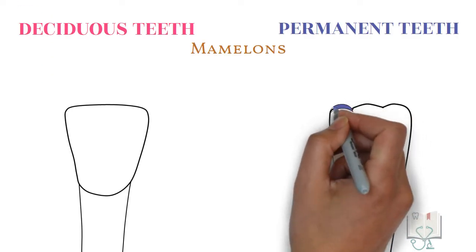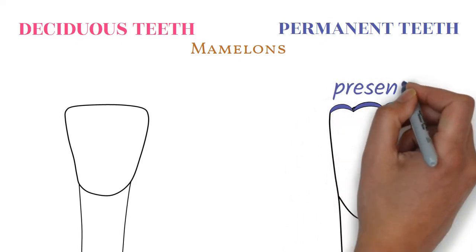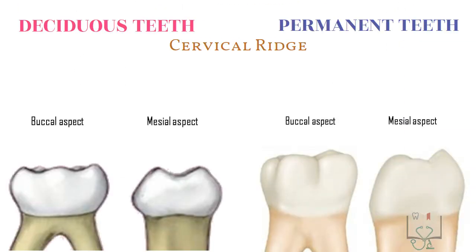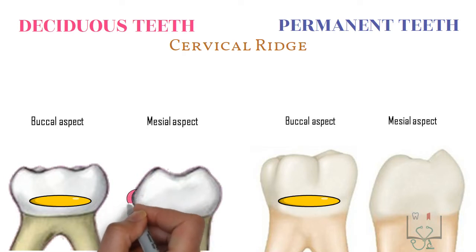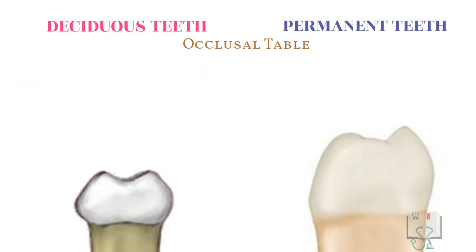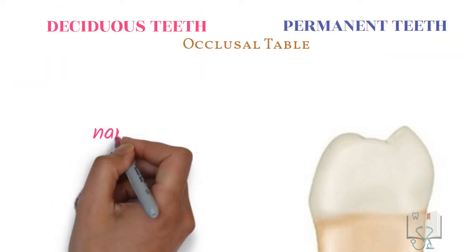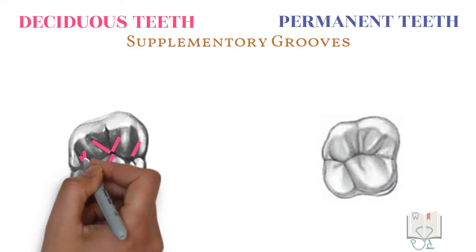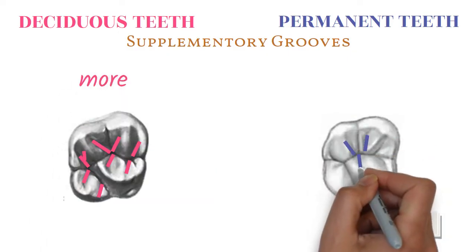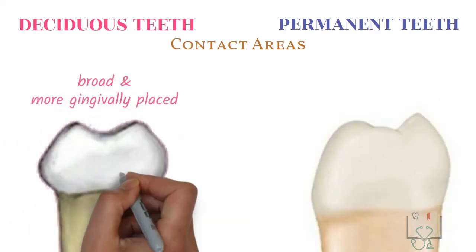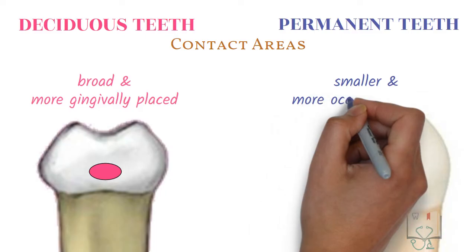Mamelons are three protuberances on the incisal ridge of all incisors, present only in permanent teeth and absent in deciduous incisors. The cervical ridge is present on the buccal surface of all molars; however, in deciduous teeth it is more prominent than in permanent teeth. In deciduous teeth, the occlusal table of molars is narrow whereas in permanent teeth it is broad. In deciduous molars, the number of supplemental grooves is greater than in permanent molars. Also, in deciduous dentition, the contact areas are broader and more gingivally placed than in permanent teeth.